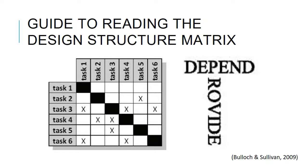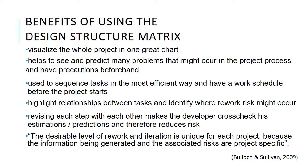For example, if we take task 3: task 3 depends on task 1, task 4, and task 6. Task 3 provides information for task 4 and task 5. The benefits of using the design structure matrix are: it visualizes the whole project in one chart; it helps predict problems that might occur and prepare precautions beforehand; it sequences tasks more efficiently and creates a work schedule before the project starts; and it highlights relationships between tasks and identifies where rework risk might occur. Revisiting each step with others makes a developer cross-check estimations and predictions, therefore reducing risk.